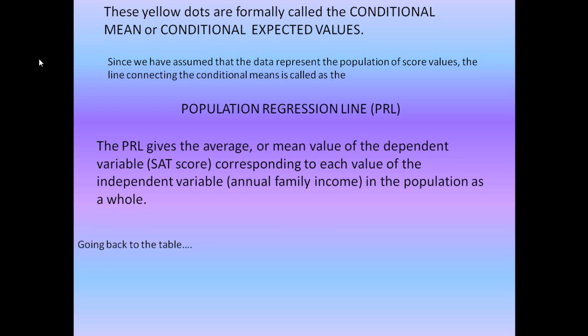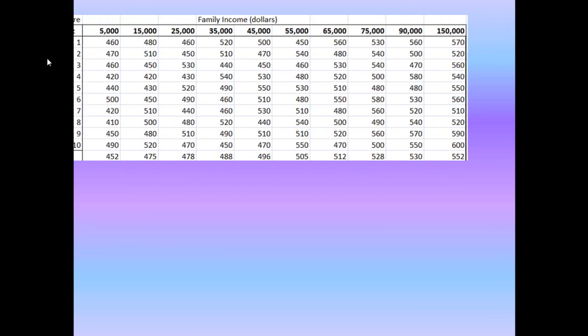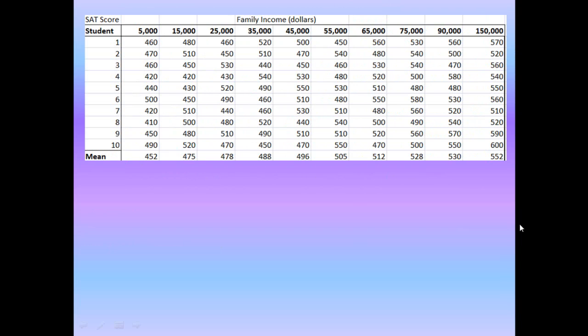With this information, let's go back to the table. We see that corresponding to an annual income of $25,000, the average SAT score is 478, whereas corresponding to an average annual income of $45,000, the average SAT score is 496. In short, the PRL tells us how the mean or average value of y is related to each value of x in the whole population.